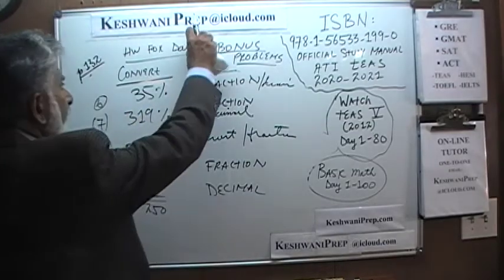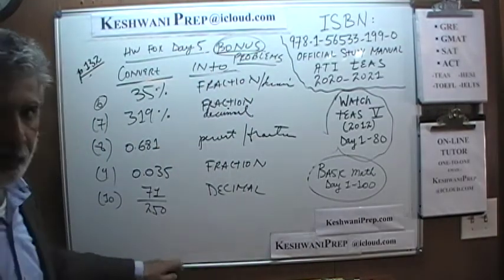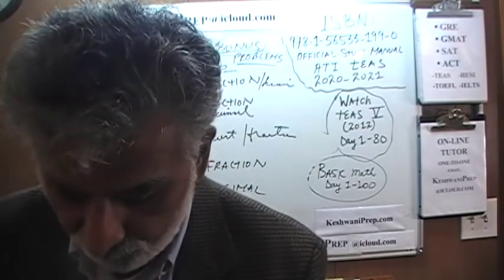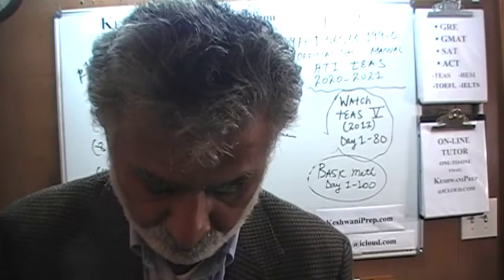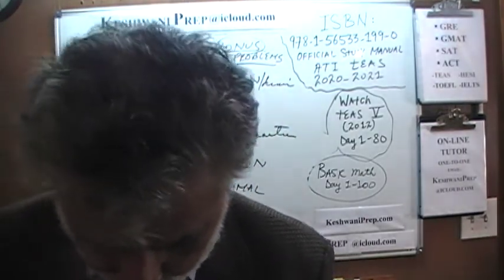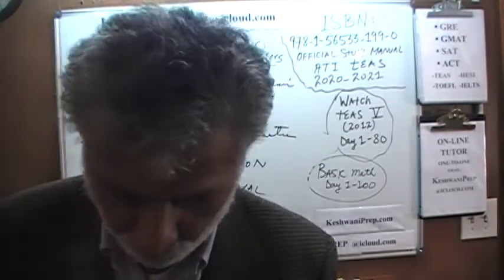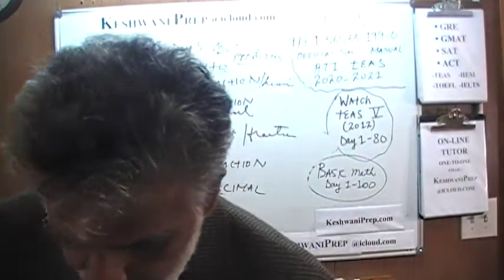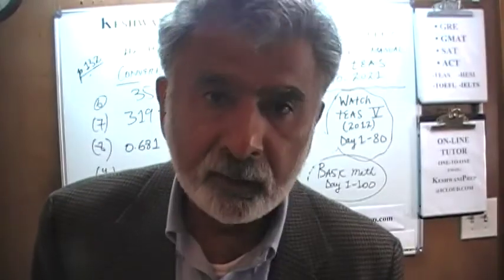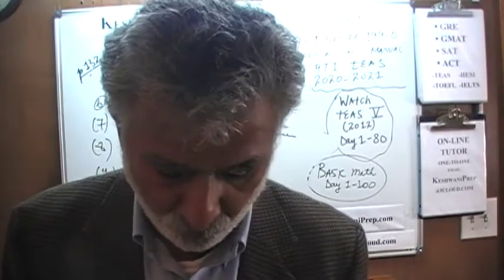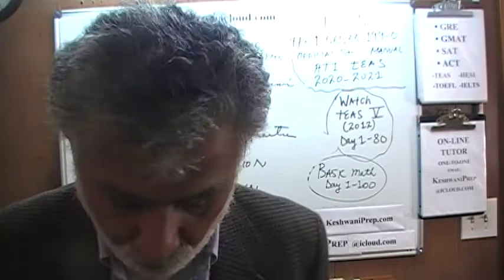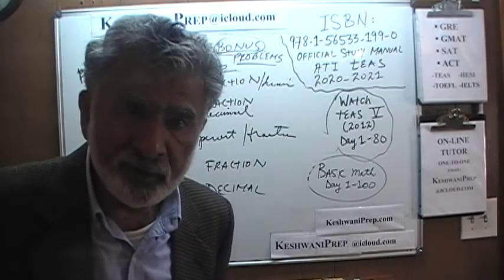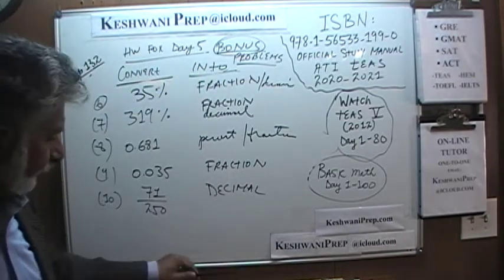These are your homework problems for day number 5 — they are bonus problems, not in the book. After tomorrow's video, day number 5, we will be done with the first topic: chapter 20 on page 129, which deals with converting fractions, decimals, and percentages. It is a very important topic and we must master it thoroughly. After that we will move on to chapter 21, which covers arithmetic operations and PAMDAS order of operations. Do these five problems ahead of time and we will work through them together. You can reach me at keshwaniprep at icloud.com. Bye now.